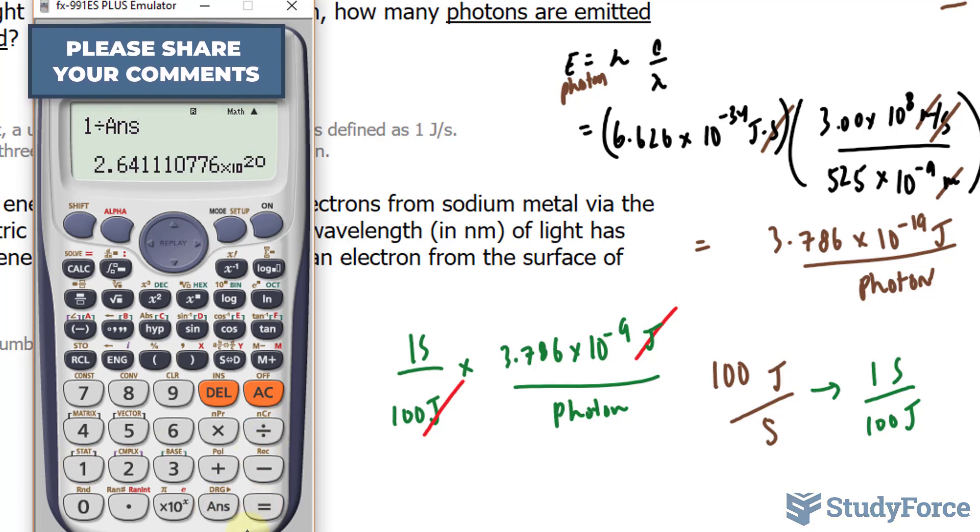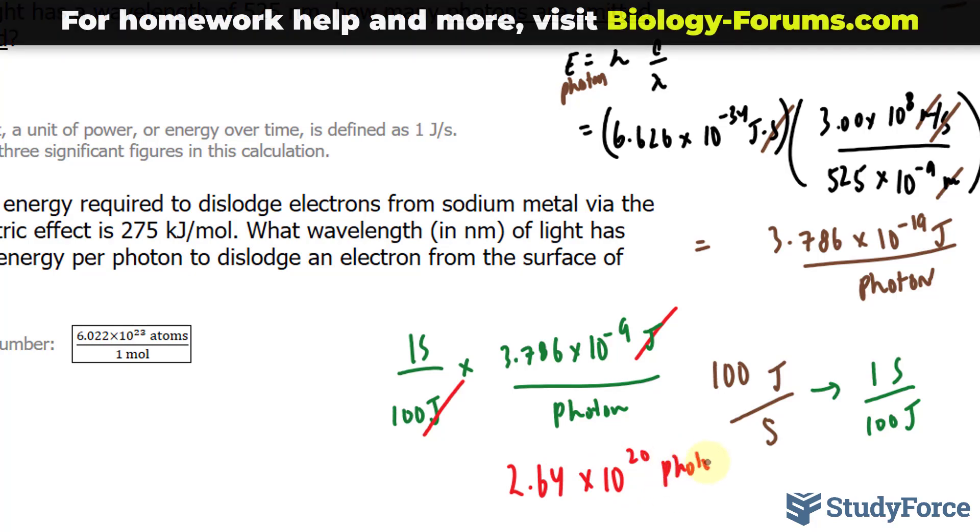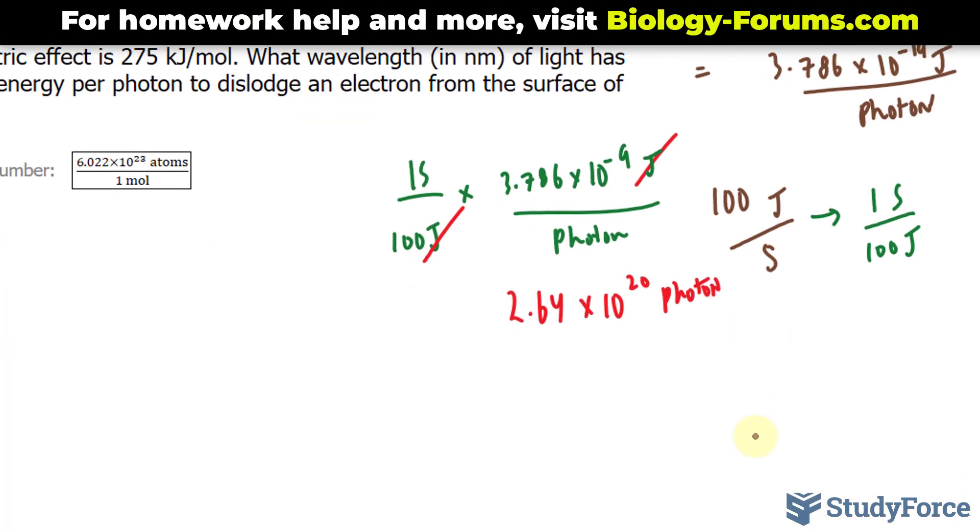1 divided by the number that I just found and that's 2.64 times 10 to the power of 20 photons per second.